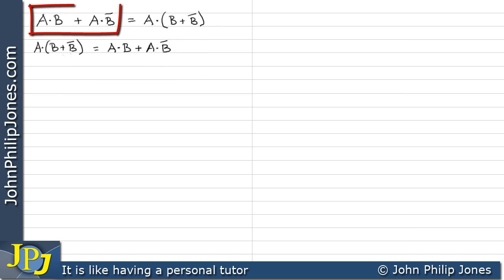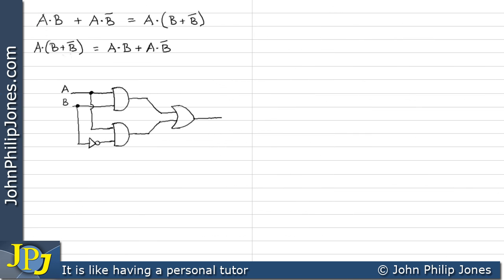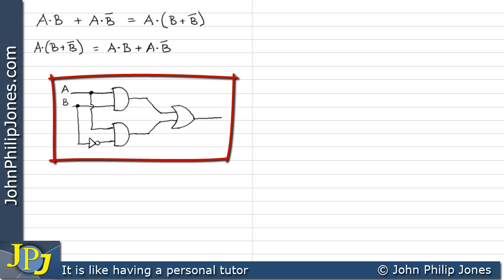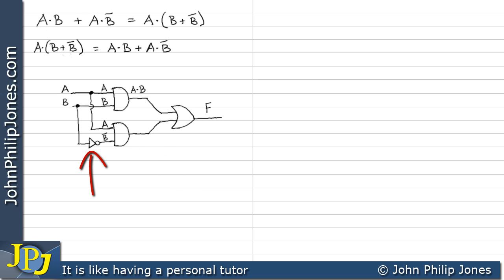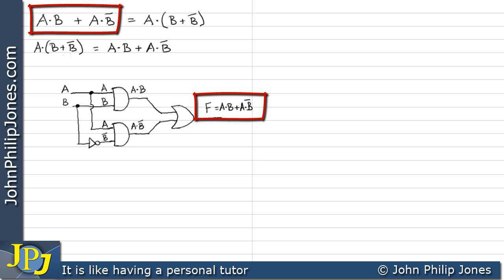Let's draw the logic circuit for this. Here we can see the logic circuit. Let's derive the Boolean expression at F. The first AND gate has inputs A and B, so its output is A AND B. Looking further down, we also have input A, and this one has input NOT B, because it comes from a NOT gate connected to the B input. So here we have A AND NOT B. Consequently, at F we have (A AND B) OR (A AND NOT B).